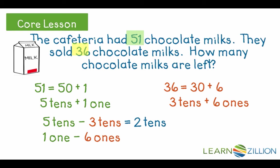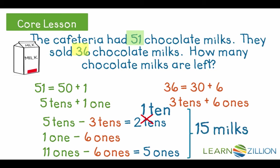So we take one of the tens and break it up into ones. Now we have 11 ones minus 6 ones is 5 ones. There's 1 ten and 5 ones left, so there are 15 chocolate milks left.